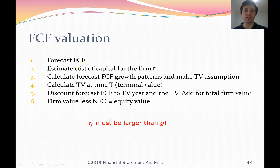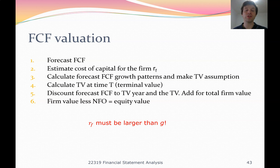You forecast the free cash flows first, then estimate the cost of capital for the firm — we're going to use a weighted average cost of capital in lecture 10. You can forecast the free cash flow growth patterns to make your terminal value assumption. There are three different terminal value assumptions: free cash flow equal to zero, free cash flow staying constant, or free cash flow growing by a certain percentage every year. You then calculate the terminal value, discount the free cash flows and terminal value to the current year, and add them together. Firm value less net financial obligations equals equity value; divide by the number of shares to get a price per share.